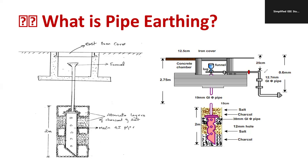In another diagram, the distance between the top layer and where the rod starts is around 2.75 meters. Below that you can see alternate layers of charcoal and salt to minimize earth resistance as low as possible. The diameter of the hole is 12 millimeter and the 38mm GI pipe. I prefer the diagram on the left side for exam point of view because it is very easy to draw.